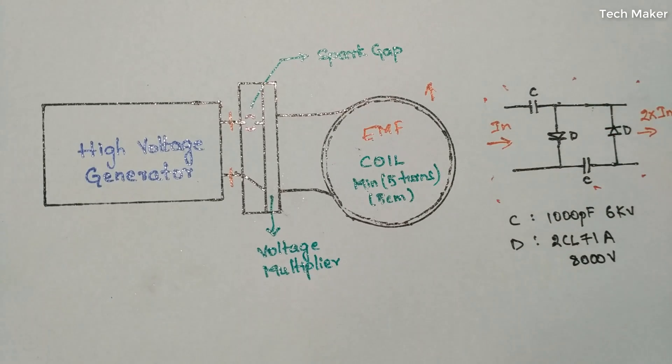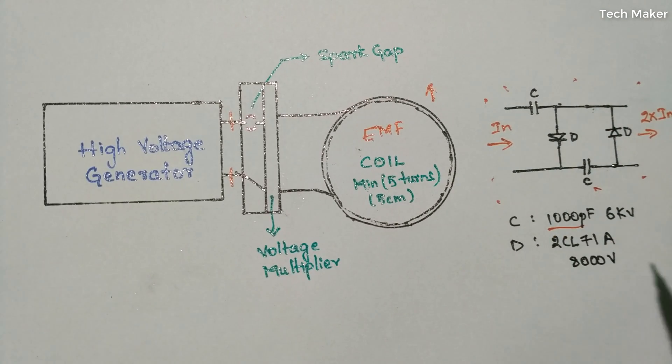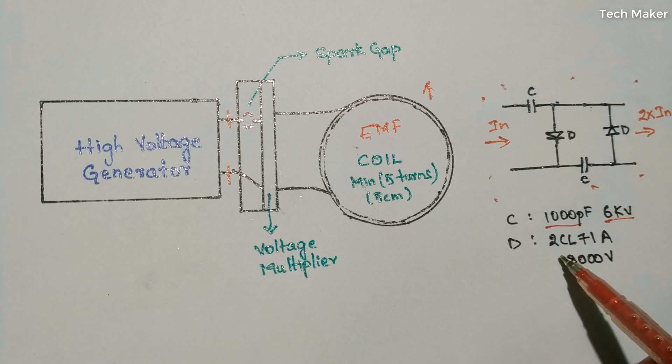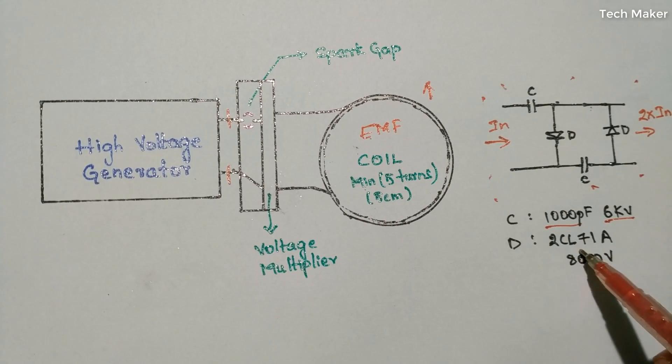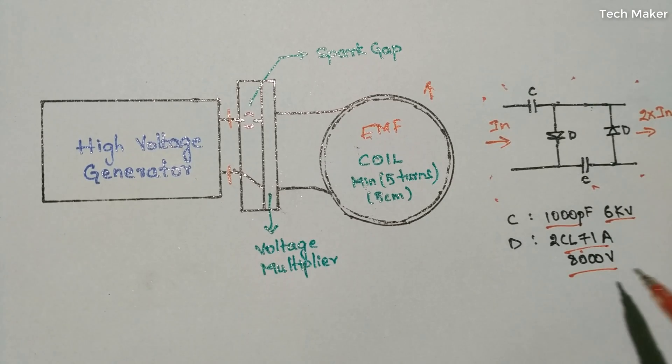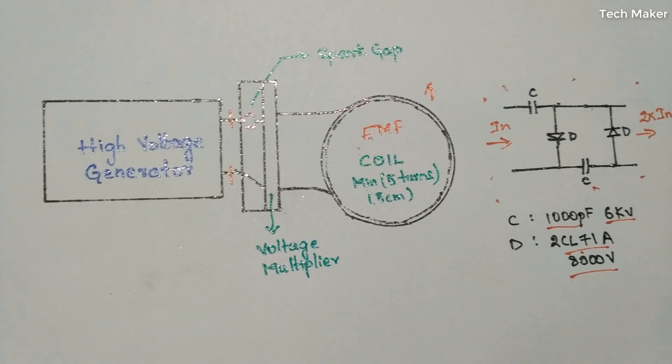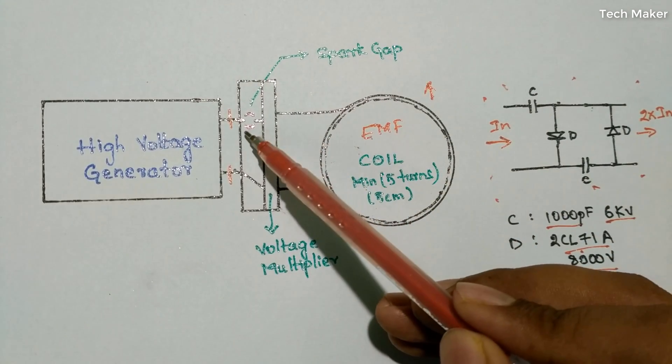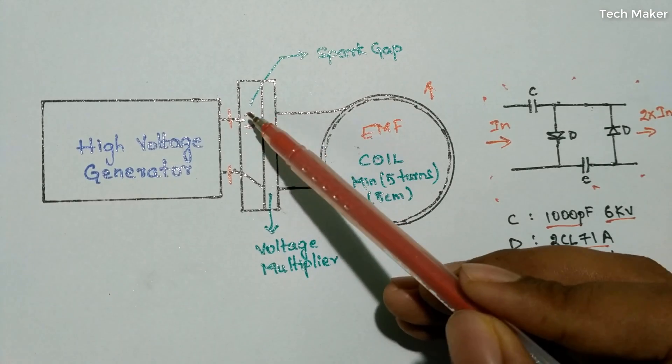Use capacitance of 1000 picofarads with 6 kilowatts, and the diode with 2CL71A with 8000 volts. You can adjust the frequency of this generator by adjusting the gap between the two terminals in the spark gap.